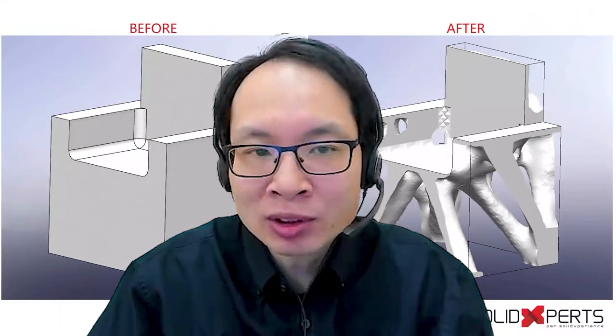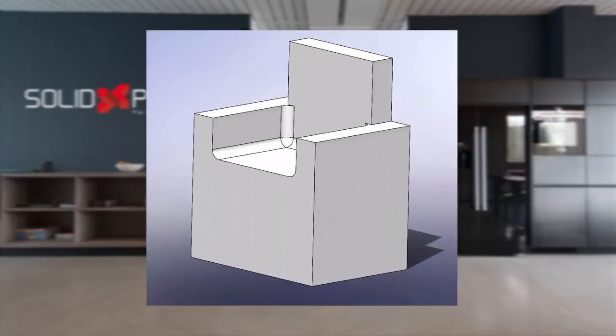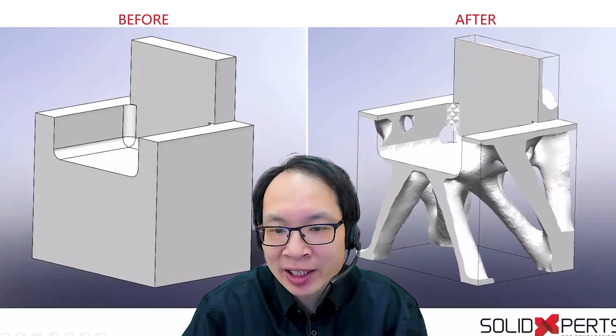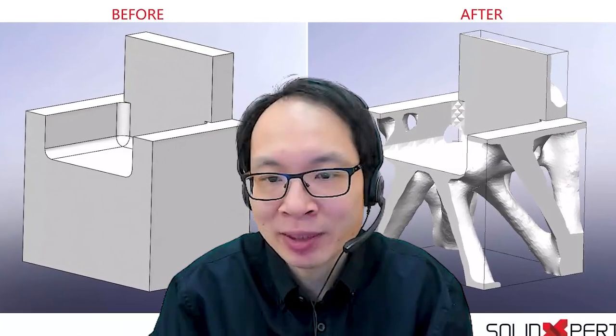Let's have a look at other examples. We have a chair. We can see what happened after the optimization. See here the areas around the legs. See how the mesh was removed to optimize the design.